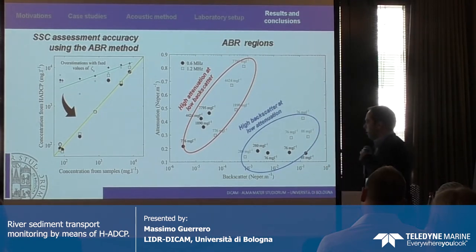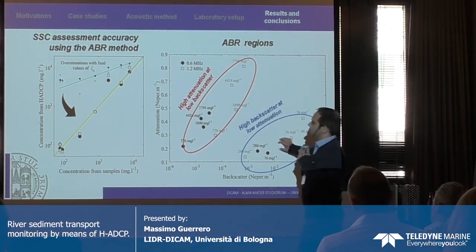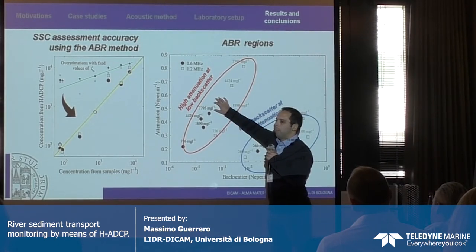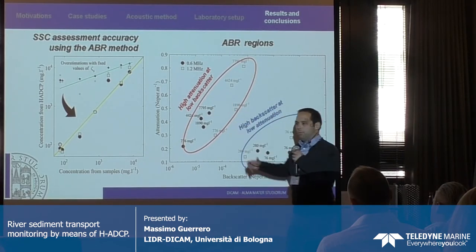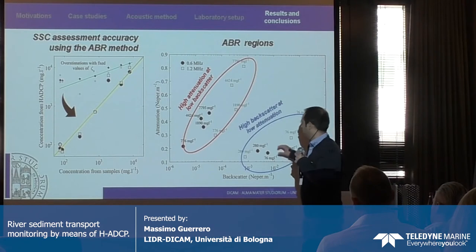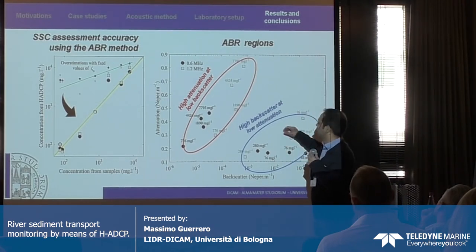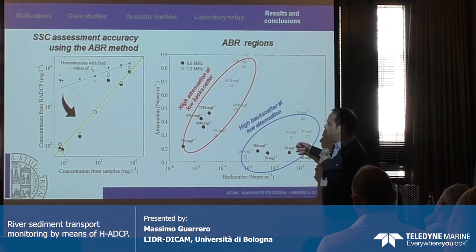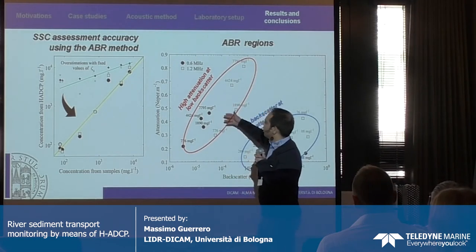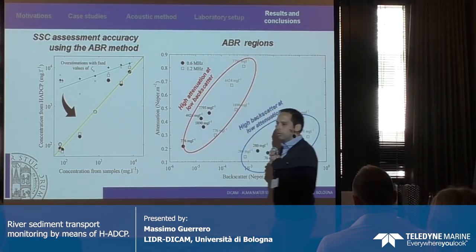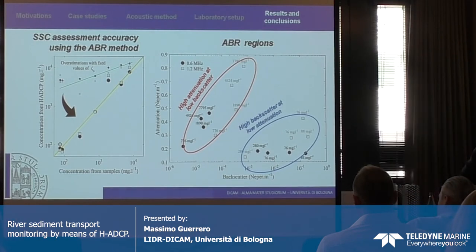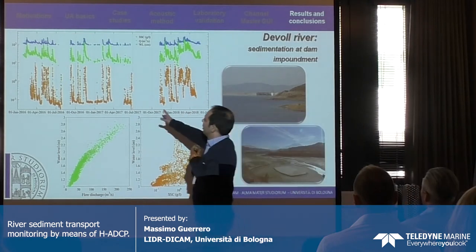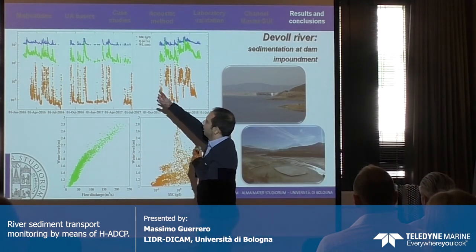In the backscatter-attenuation quadrant, you have different regions corresponding to different ABR values, which means different types of suspended matter. One region with high backscatter and low attenuation was experienced during low flow conditions, while another region showed low backscatter and high attenuation during other conditions.